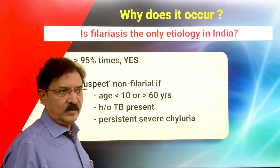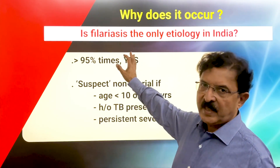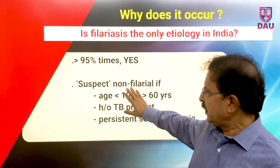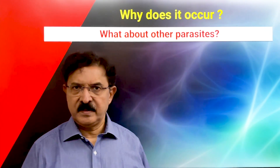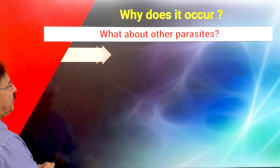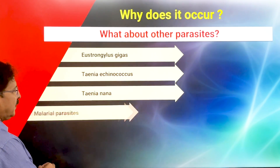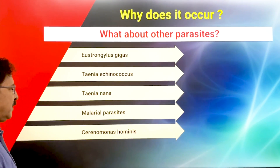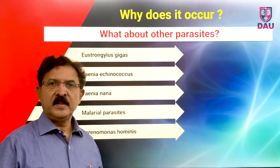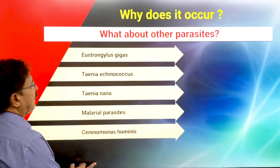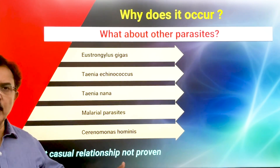For those of you in India treating chyluria: 95% of the time it is filarial, and non-filarial etiology should be considered in those three routes. Are there any other parasites? There are a few parasites like Strongyloides, Echinococcus, Hymenolepis nana, malaria parasites, and Cercomonas hominis. These are rare, with only anecdotal cases reported in literature where these parasites give rise to chyluria, and direct causal relationship has not been proven in those reported cases.